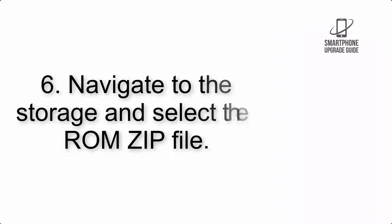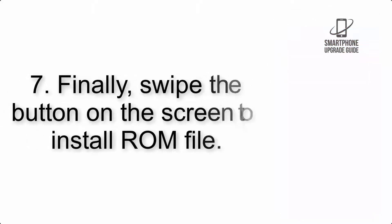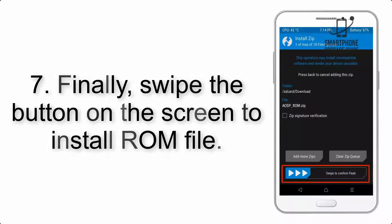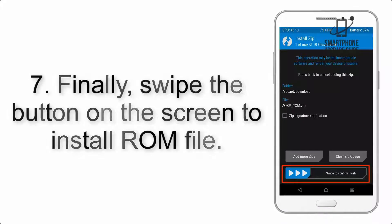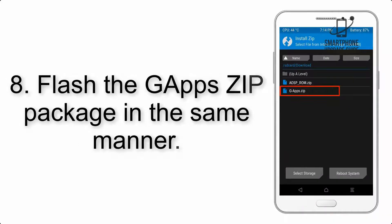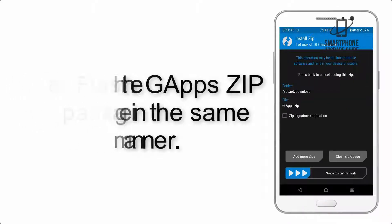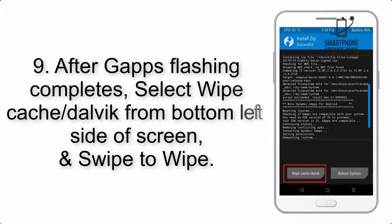Step 5: Go back to the recovery main screen and tap on the Install button. Step 6: Navigate to the storage and select the ROM zip file. Step 7: Finally, swipe the button on the screen to install the ROM file.